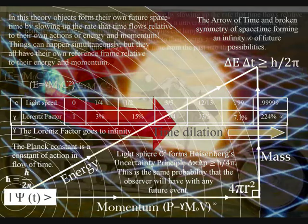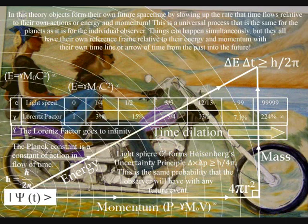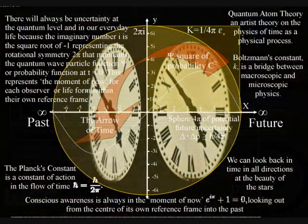In this theory, this process starts with a photon of energy, with objects and individuals forming their own future by slowing up the rate the time flows.